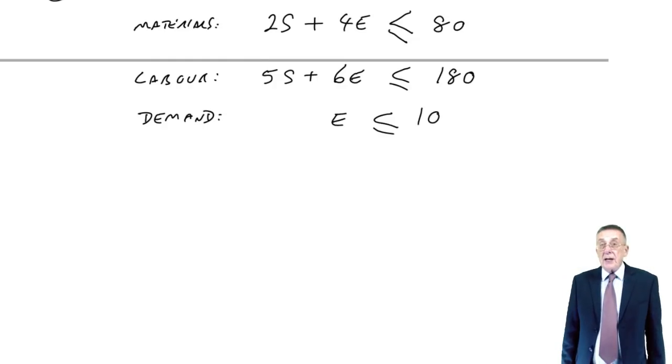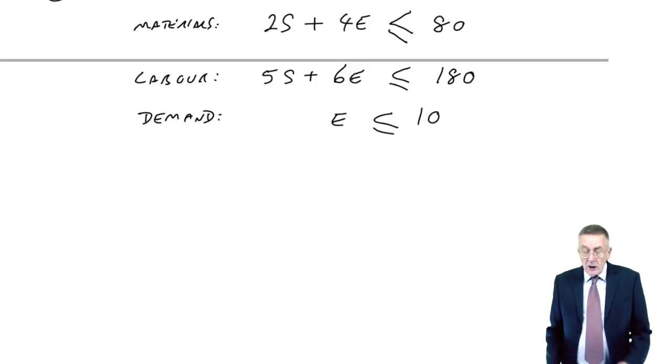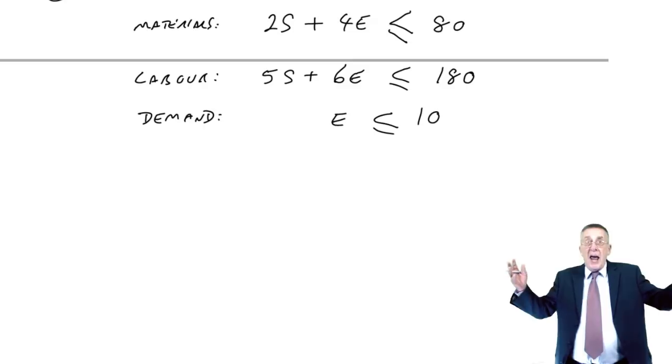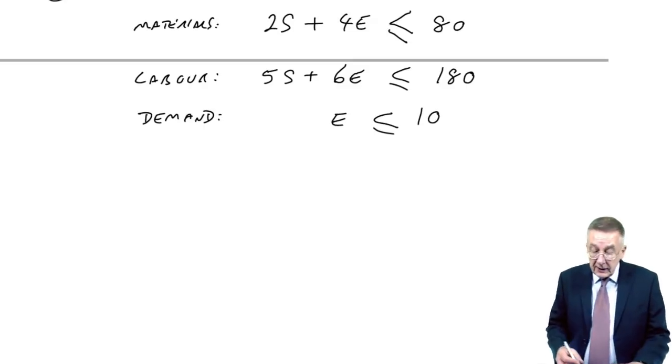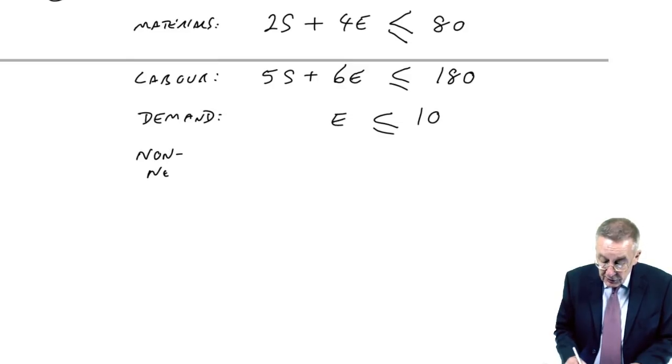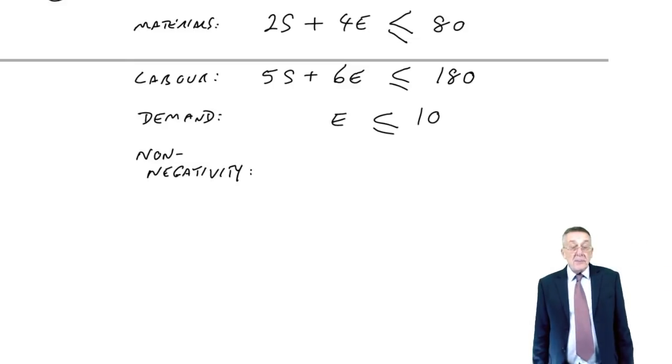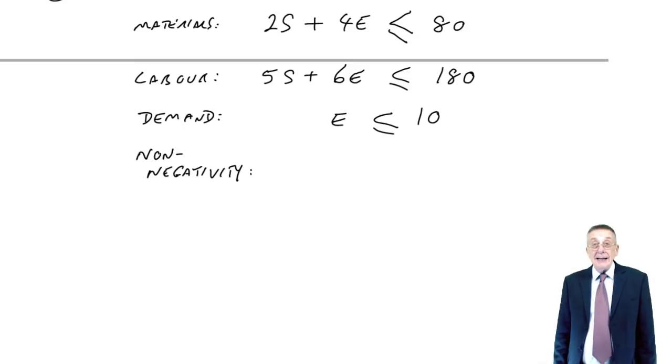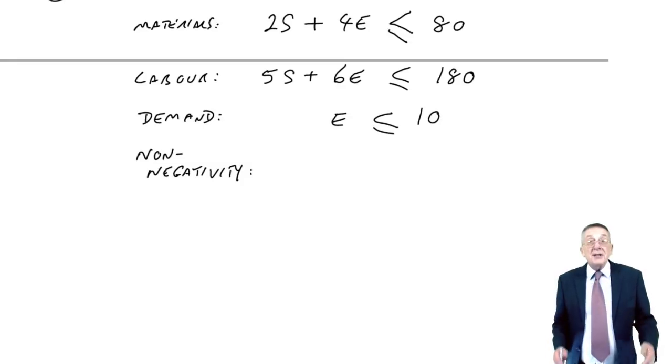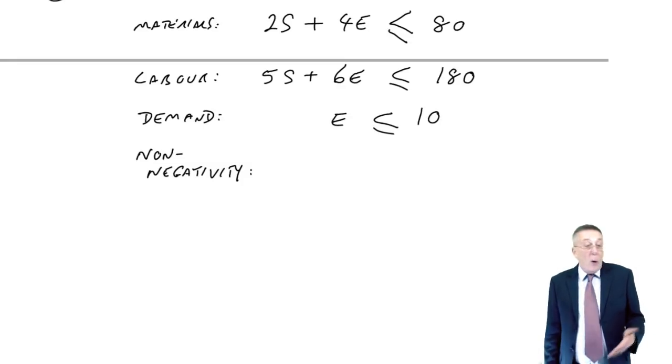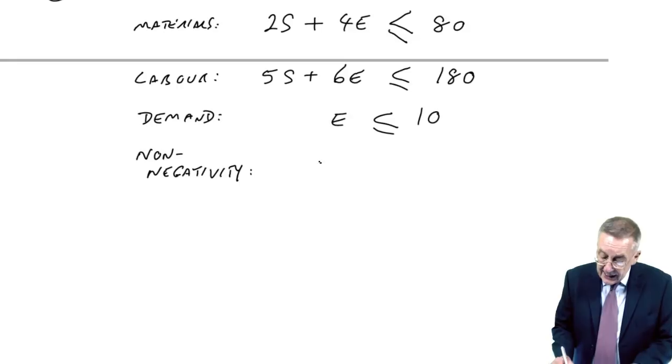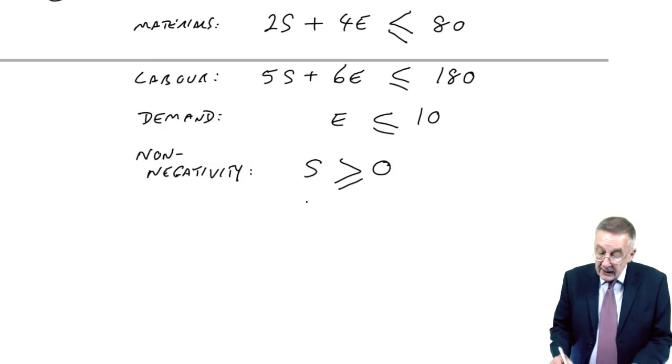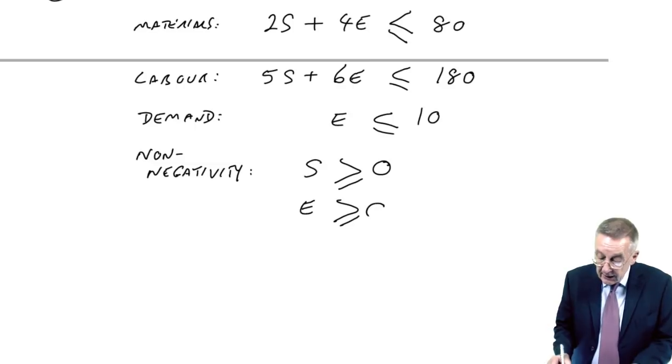Finally, because we're doing this using a bit of algebra, we're just using symbols and forgetting these are chairs for the moment. There are, in fact, two other constraints which we call the non-negativity constraints. In whatever answer we end up with for S and for E, we obviously can't end up with a negative answer. We could end up deciding to produce zero standards or zero executives, but we certainly can't produce a negative number. So S, whatever figure we end up with, it must be greater than or equal to zero. And similarly, E greater than or equal to zero.